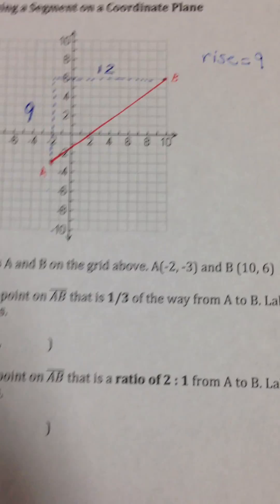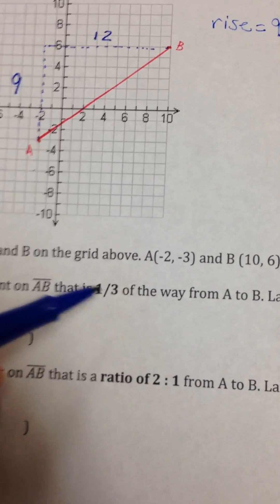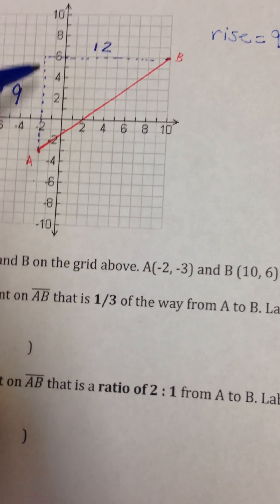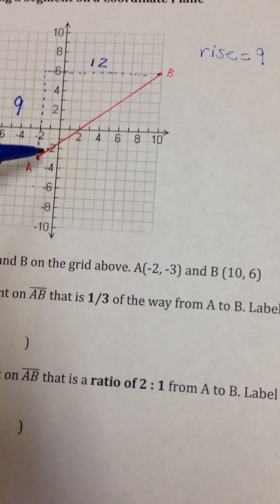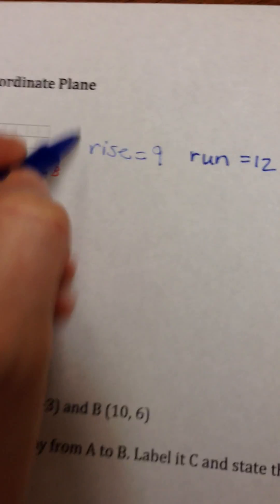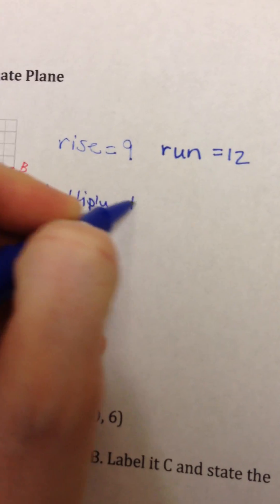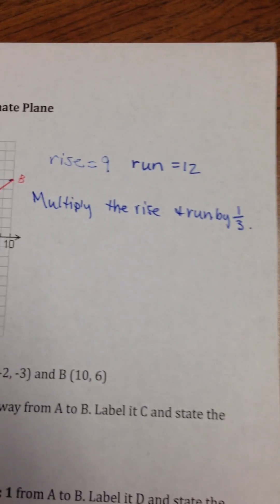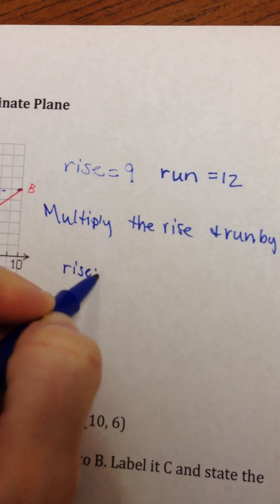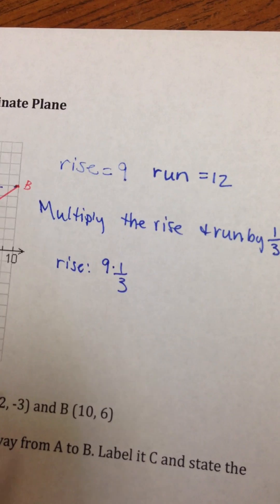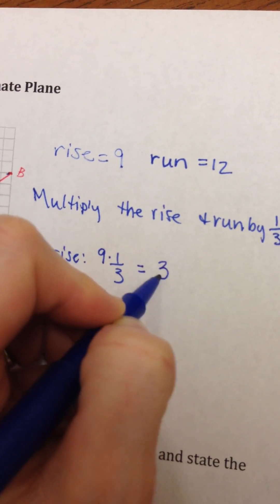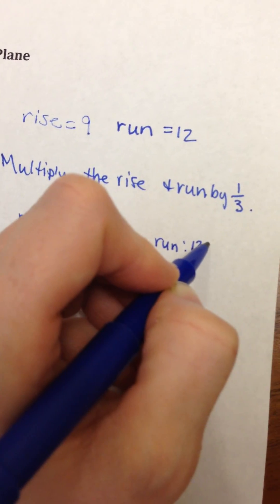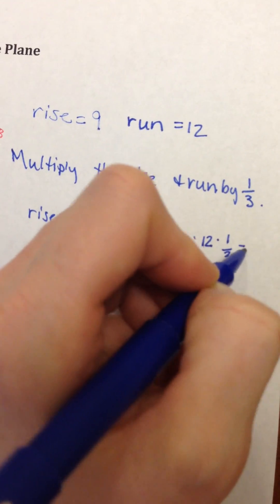We need to think about the fraction they want us to break it up into — a third of the way. Finding a third of the way on a diagonal line is challenging, but finding a third on a vertical or horizontal line is easy. You just take those squares and divide by a third. So we multiply the rise by one third: 9 times one third equals 3. And multiply the run by one third: 12 times one third equals 4.